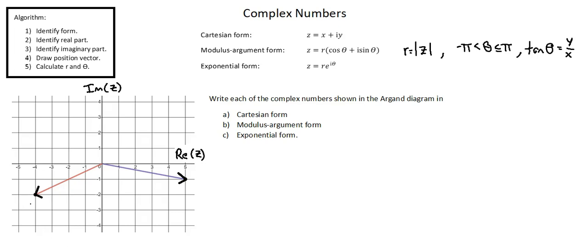Before we begin, I'm going to label the end points of each vector as p and q. And we'll begin working with the complex number represented by vector op, which equals negative 4, negative 2.